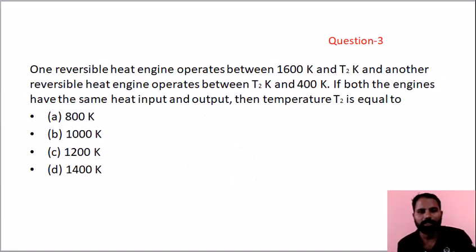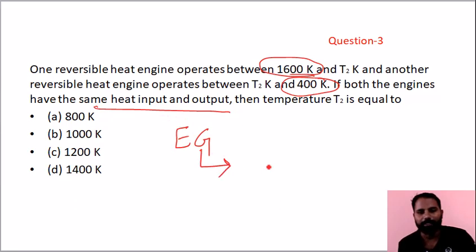Next question, question 3: T1 is 1600 Kelvin, T3 is 400 Kelvin. For same efficiency, use geometric mean: T2 equals square root of 1600 times 400, which is 40 times 20, equals 800 Kelvin. Option A is the answer.